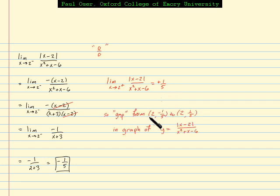A gap from 2, remember that's the value of x is approaching, at negative 1 fifth on the left, to 2 positive 1 fifth on the right. We have a gap in the graph of y equals this expression right here. So the value of the limit that we sought was negative 1 fifth. The graphical interpretation, a gap from there to there. That's it.